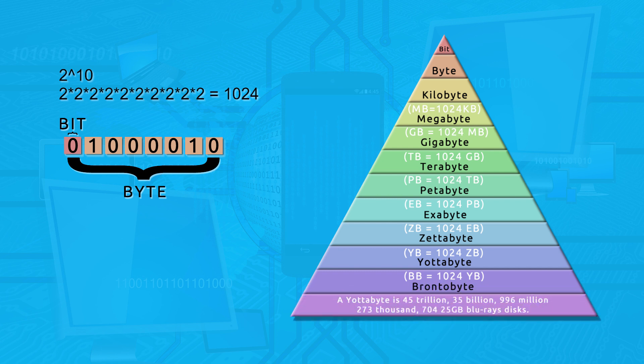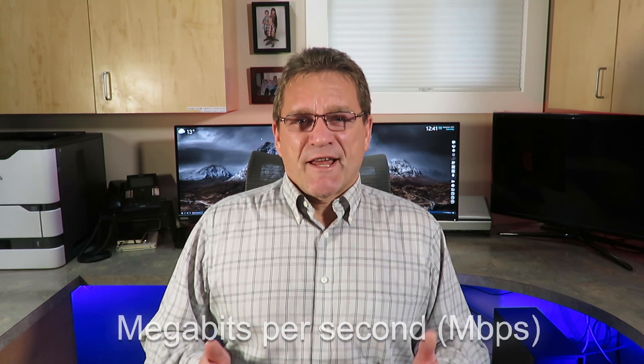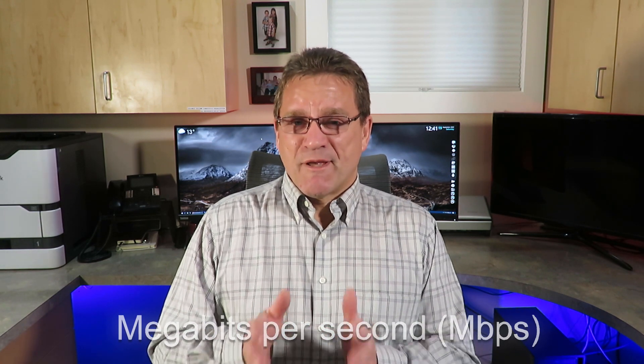Just for comparison, a yottabyte is 45,035,996,273,704,25 gigabyte Blu-ray disks. Now you know why storage is measured in bytes or more commonly megabytes, but not all providers or manufacturers play nice. A lot of them measure things in megabits because it's easier to sell. If you have an internet package measured at 100 megabits per second, that sounds much better than saying 12.5 megabytes per second — but 12.5 megabytes is exactly how much data you could transfer in one second on a 100-megabit connection.